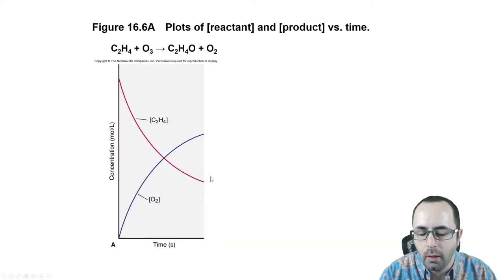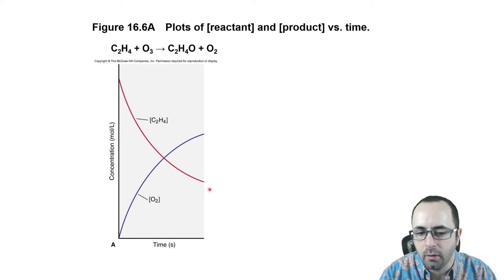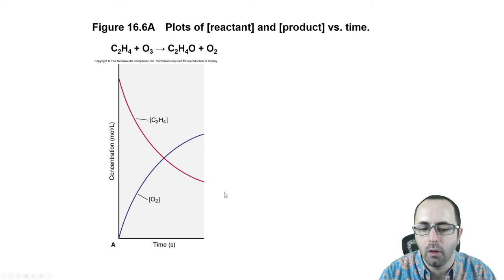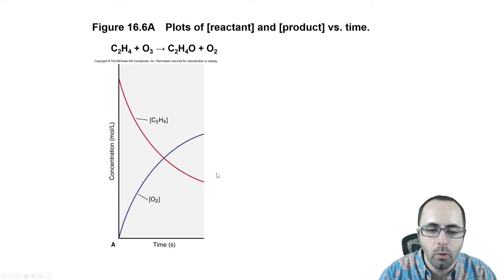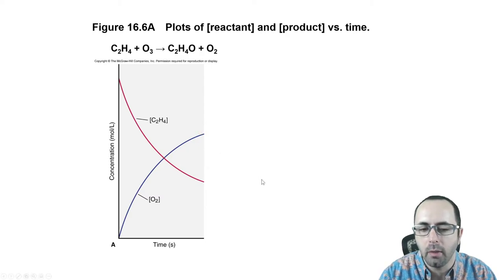In terms of products and reactants, the reactants including C2H4 are decreasing in concentration over time, which is why the reaction slows down. As we move forward, the products increase — we start with no products and get more and more. Depending on the reaction, we may end up with more or fewer products; we'll discuss that more when we get to equilibrium in the next chapter.